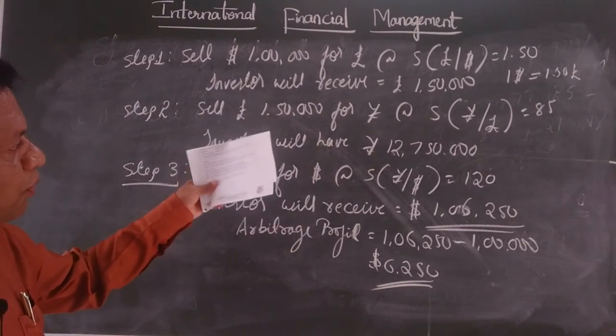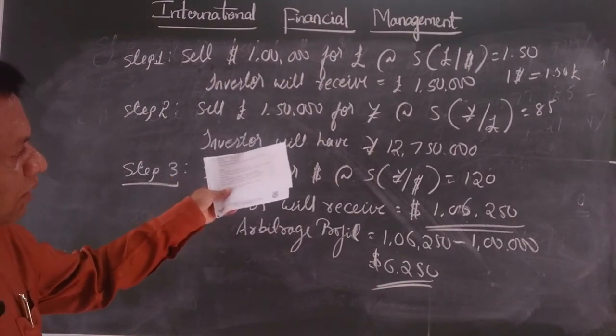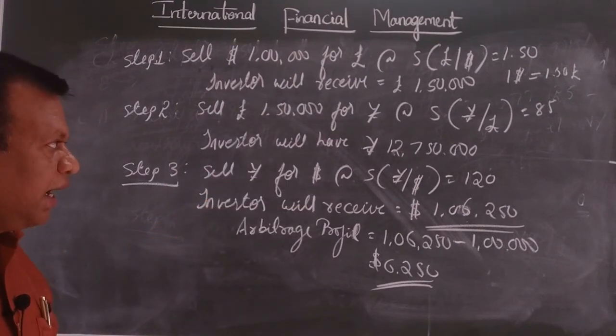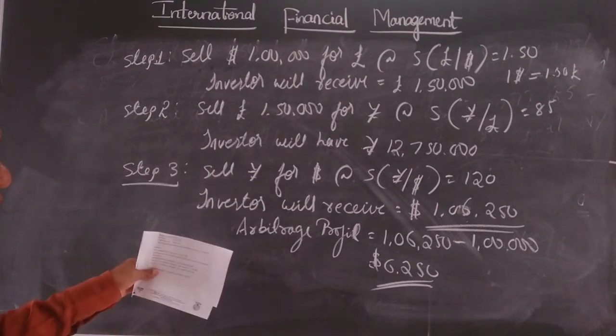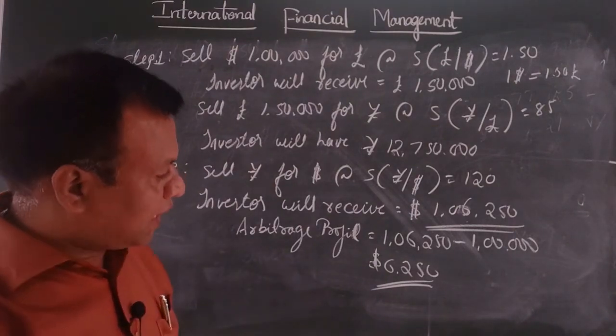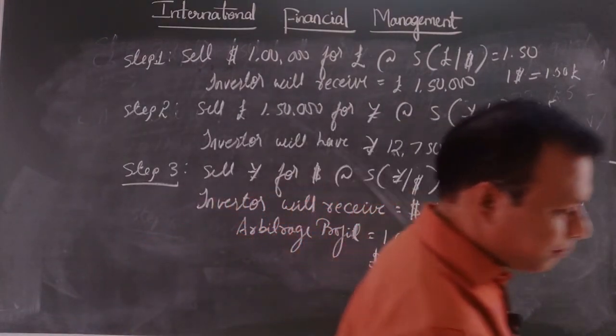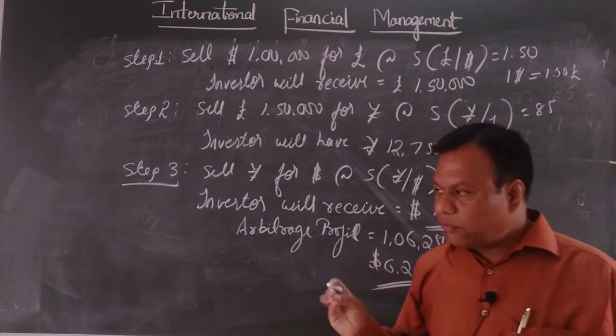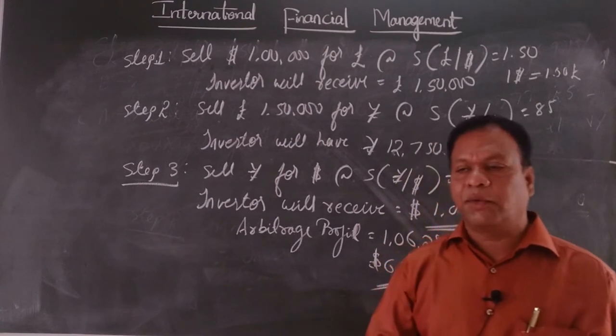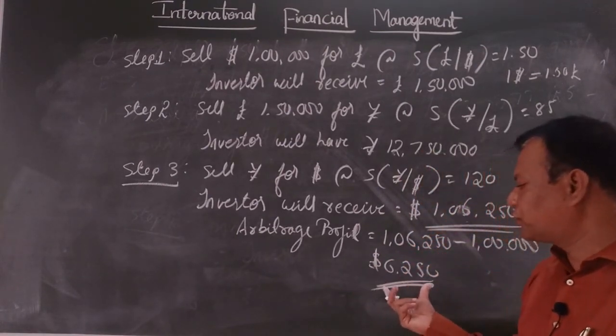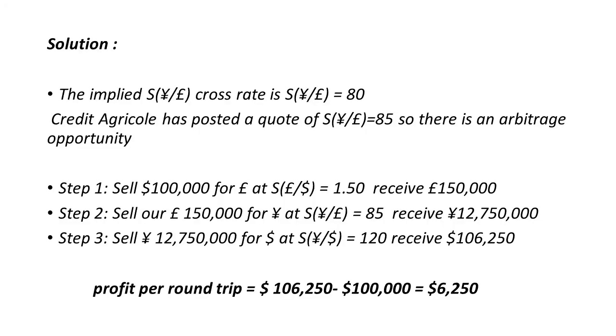In the same way, once we get 1 lakh 50,000 pound, that we are selling to yen. So we get yen of 1 crore 27 lakh 50,000. And this yen again we are converting back to dollar. Once we convert back to dollar, so we will get 1 lakh 6,250 dollars. Initially how much we had? Initially we had, we started with 1 lakh and we end up in getting 1 lakh 6,250. So thereby we realized a profit of 6,250 dollars.